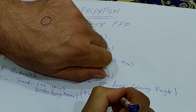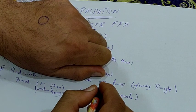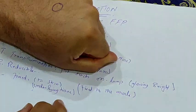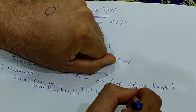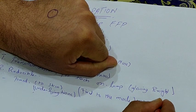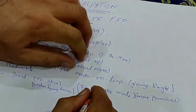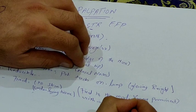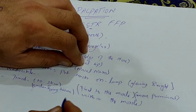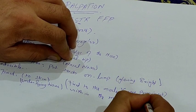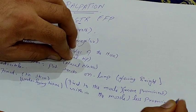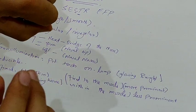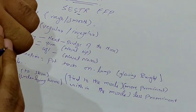Then check if it is fixed to the muscle surface. Tell the patient to contract the muscle. If the lump becomes more prominent on contraction, it is fixed to the surface of the muscle. If the lump becomes less prominent on contraction, it is within the muscle. If it remains the same, it is not related to the muscle.